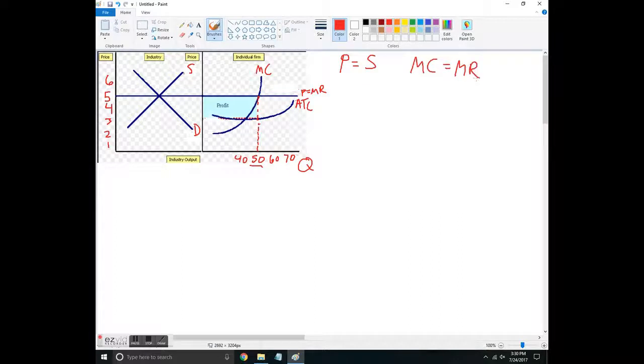...marginal cost equals marginal revenue. And so that happens at 50. And since average total costs are below marginal revenue, which is also the same as average revenue, then this firm should be making a profit. So we see this...